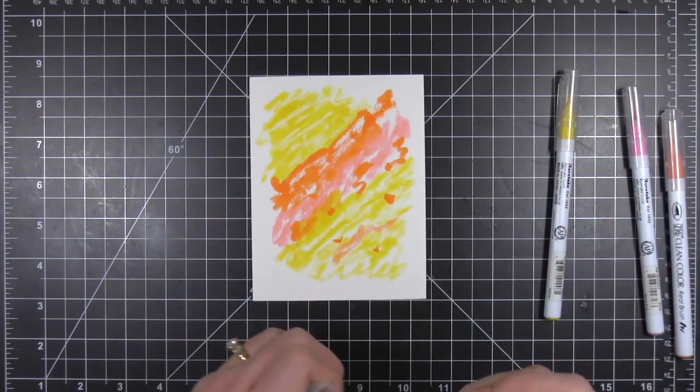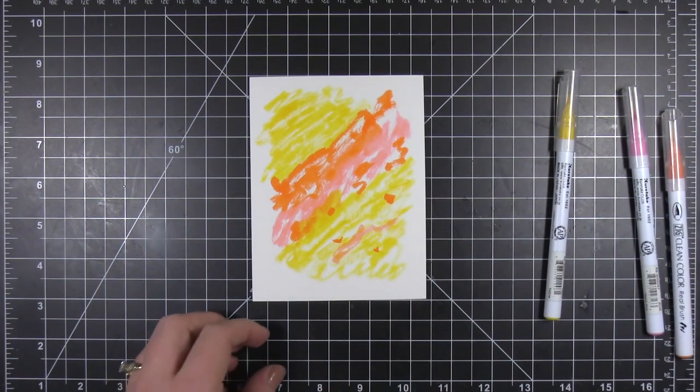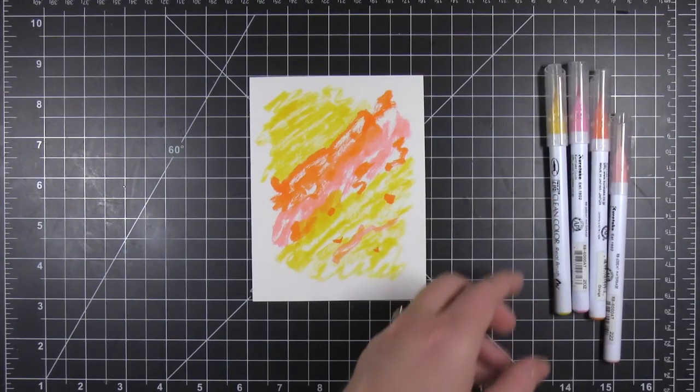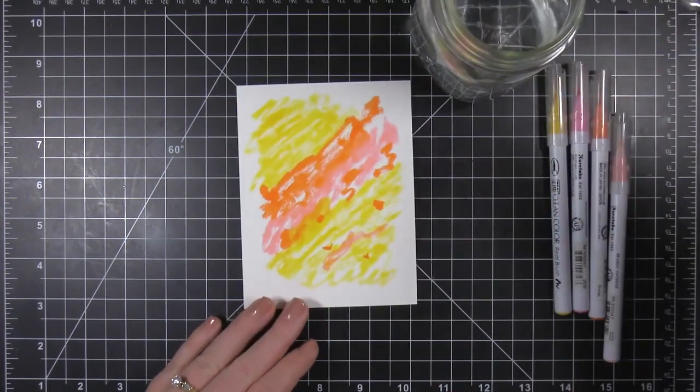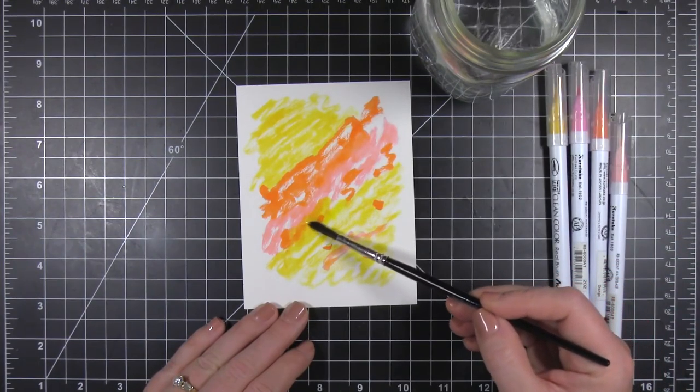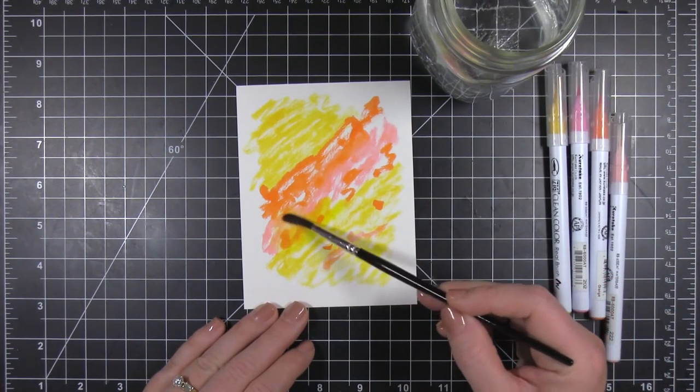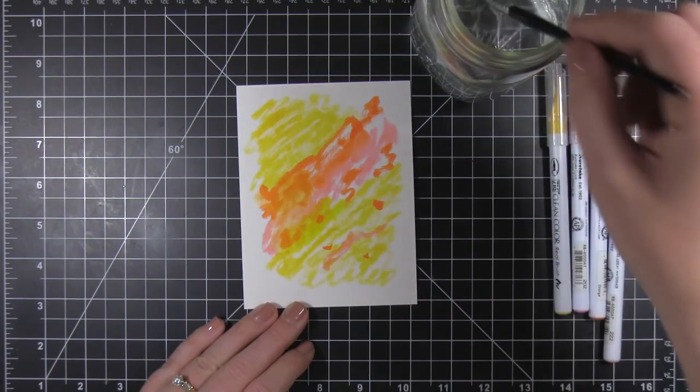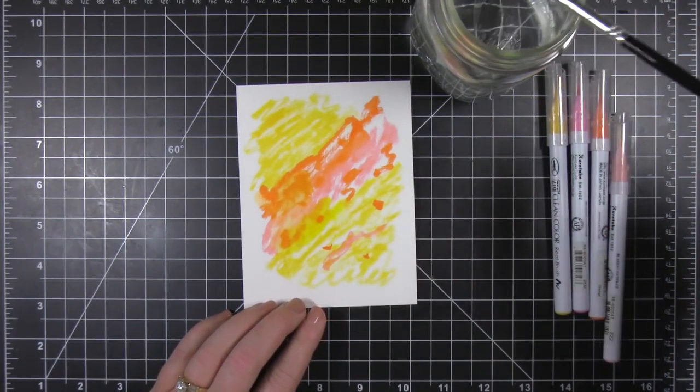But today I'm creating a watercolor look, so I will be adding water, but that is an option. If you just want to blend these pens together with the colors, you can do that as well. So once I got all of that color laid down, I'm going to come in with just a paintbrush and some regular water. And I'm just blending these colors out.